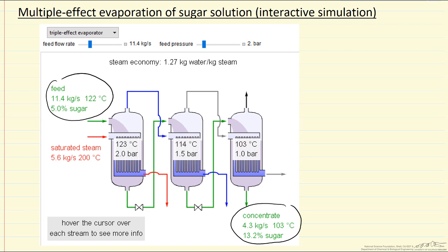We do the evaporation using a heat exchanger that we feed saturated steam - the red saturated steam which leaves as saturated water. The advantage of multiple effects is that when we evaporate water from the sugar solution, shown as the blue stream, that steam is used in the next effect of the evaporation.